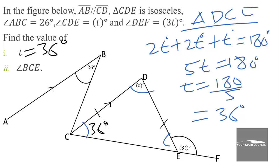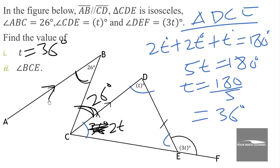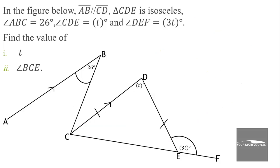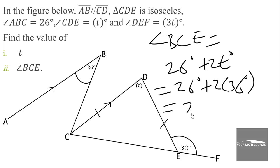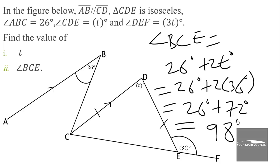Now we find angle BCE, which is this angle here plus this angle. Since t is 36 degrees, 2t is 72 degrees. This second part is 26 degrees because alternate angles are equal since line AB is parallel to line CD. So angle BCE equals 26 plus 2t, which is 26 degrees plus 2 times 36 degrees, giving 26 plus 72, which equals 98 degrees.